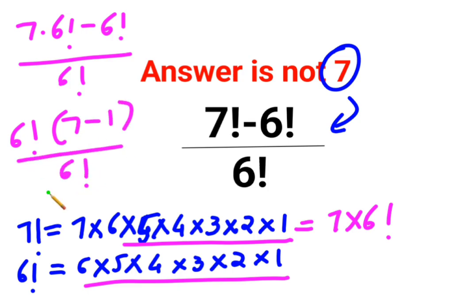Now what happens over here is this and this gets cancelled. So I am just left with 7 minus 1. So answer for this one is supposed to be 6. I hope this is very clear to everyone.